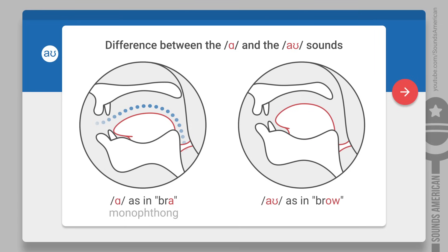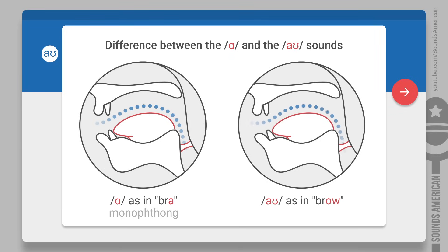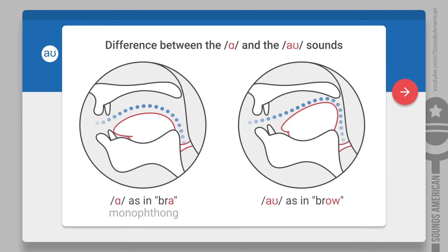However, when you pronounce the vowel, your tongue and jaw move from one position to another. The sound is called a diphthong, which means that it's made by merging two single sounds into one.